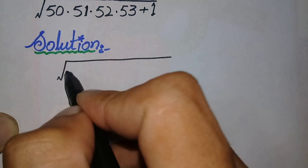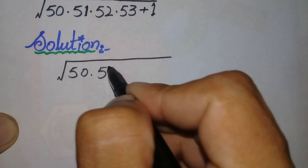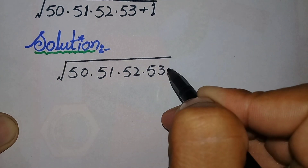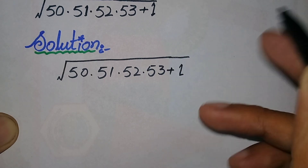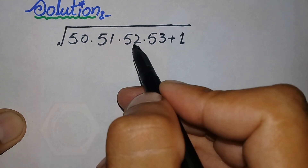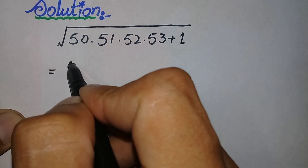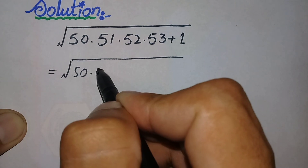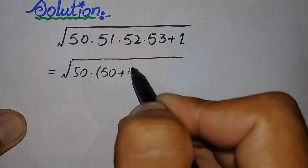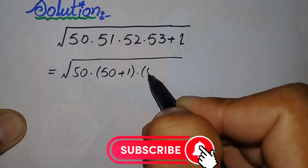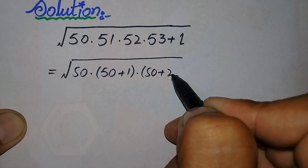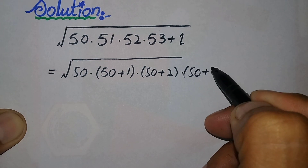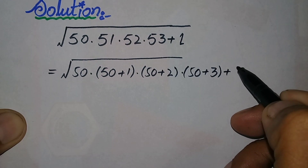The question is the square root of 50 times 51 times 52 times 53 plus 1. We can rewrite 51, 52, and 53 as: 51 equals 50 plus 1, 52 equals 50 plus 2, and 53 equals 50 plus 3, all plus 1 under the square root.